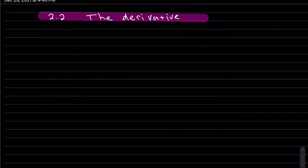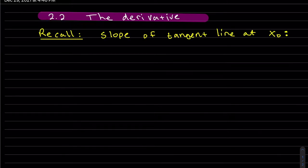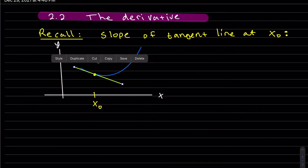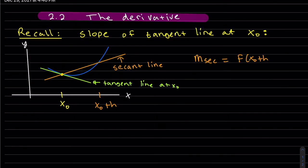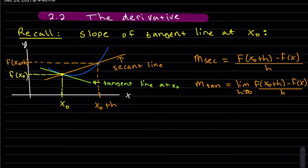We're going to start off by recalling two formulas from last time. The secant line's slope is the difference in y values over the difference in x values, which is (x naught plus h) minus x naught, which is just h. Taking the limit as h goes to zero, the secant line approaches the tangent line.